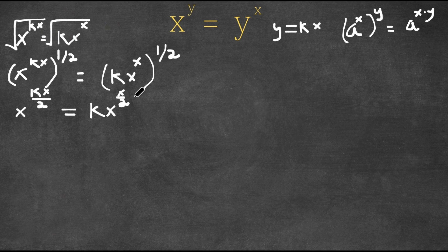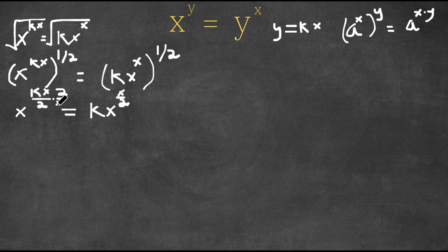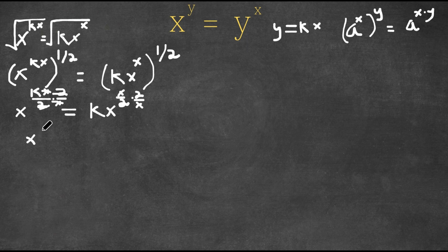Now I'm going to multiply both sides to the power of two over x, applying it to both exponents. The twos and x's cancel on the left side, leaving x to the power of k. On the right side, the twos and x's also cancel, leaving k to the power of x.